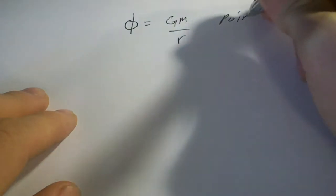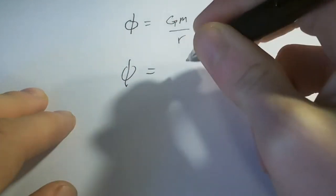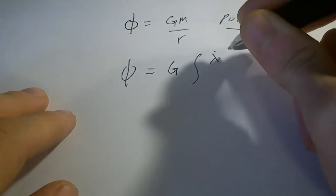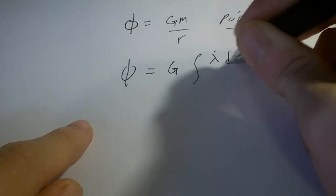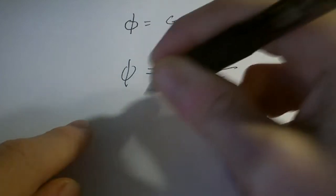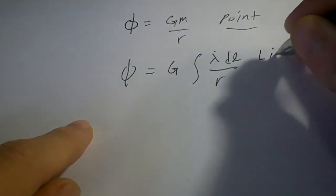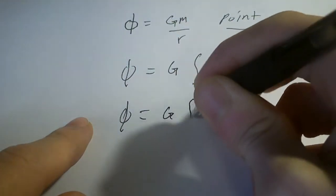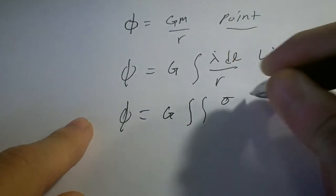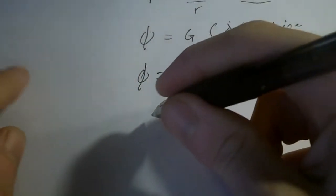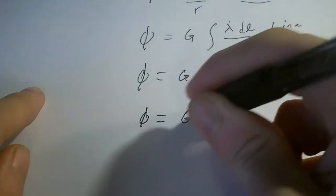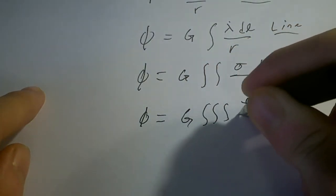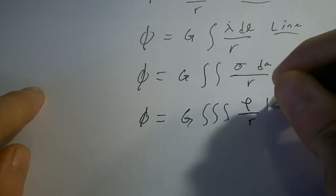For a line, it's G times the integral of the linear mass density lambda dl over r. For a surface density, it's a double integral of sigma dA over r. And for the volume, it's G times the triple integral of the volume mass density rho dV over r.